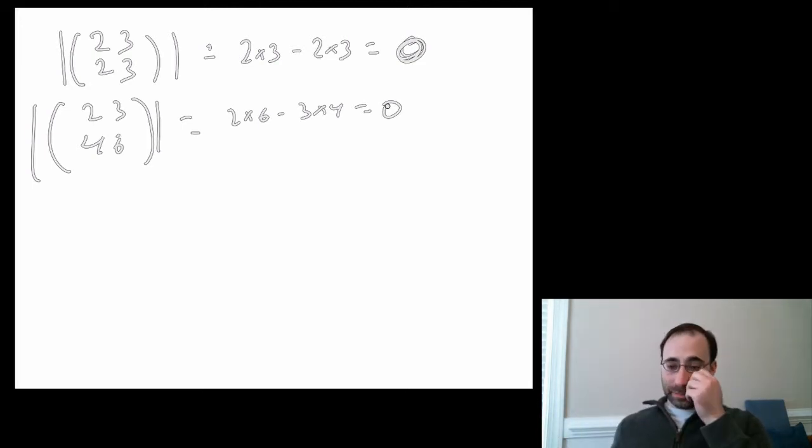So the determinant being 0 is related to the rows or the columns of the vector being multiples of each other, being the same row, being parallel instead of perpendicular, collinear to use the word we did before. So there you go for the determinant of a 2 by 2 matrix.